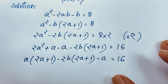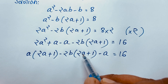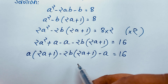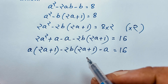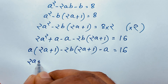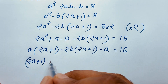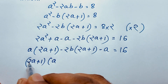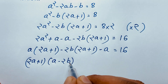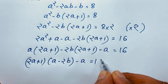Now here (2a + 1) is common. So if I factor it out: (2a + 1) times (a minus 2b) minus a equals 16.